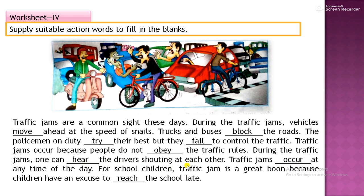Traffic jams occur at any time of the day. For school children, traffic jams are a great boon because children have an excuse to reach school late. Three forms of the verbs used here: be, was/were; move, moved, moved — a regular verb; block, blocked, blocked; try, tried, tried; fail, failed, failed; obey, obeyed, obeyed; hear, heard, heard; occur, occurred, occurred; reach, reached, reached.